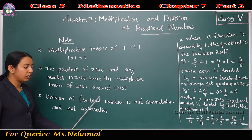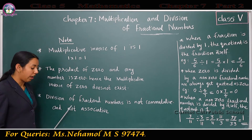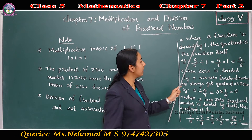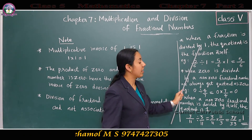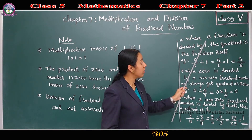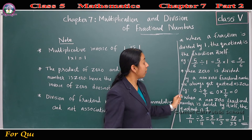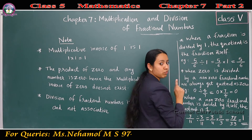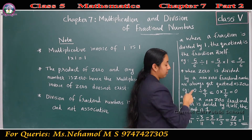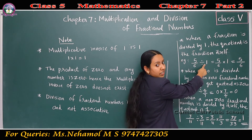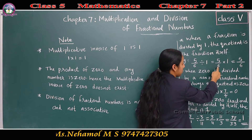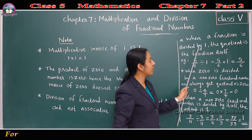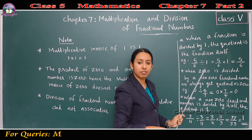Next point: division of fractional numbers is not commutative and not associative. Next point: when a fraction is divided by 1, the quotient is the fraction itself. For example, 5/6 divided by 1 equals 5/6 into the reciprocal of 1, which is 1 itself. So 5/6 into 1 is 5/6. When a fraction is divided by 1, the quotient is the fraction itself.